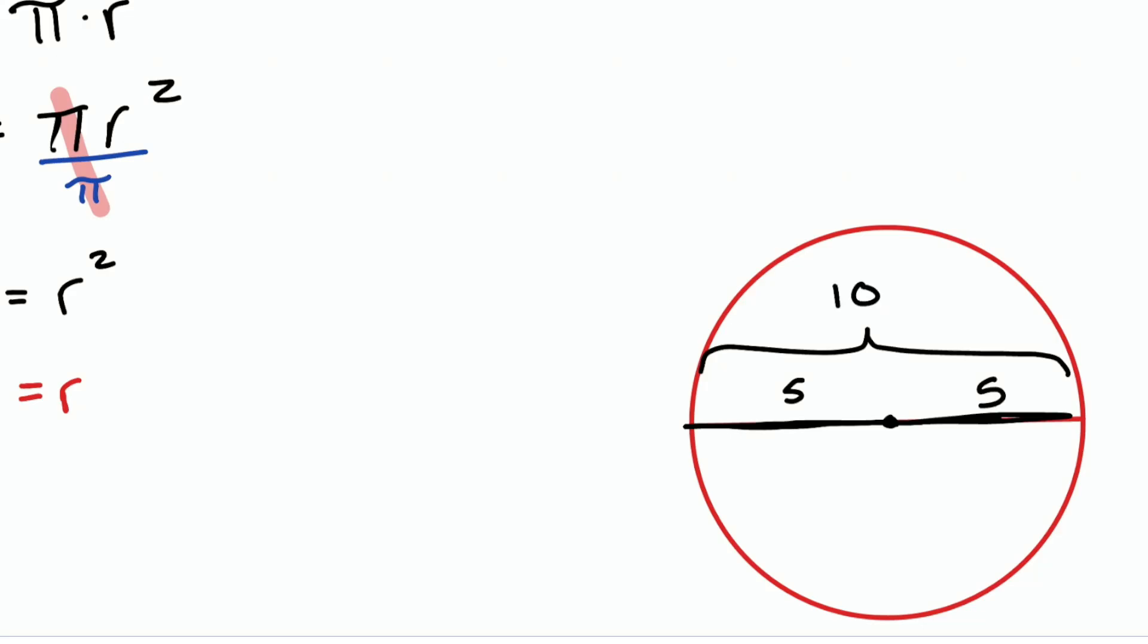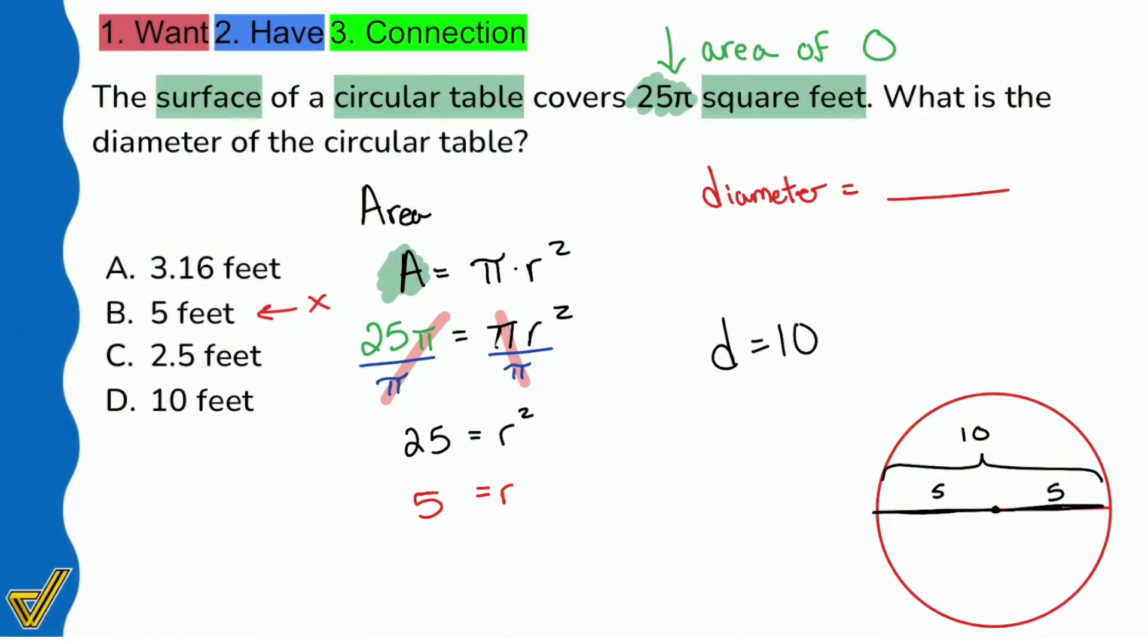Making the diameter 10. So there's our actual answer. The diameter is going to be 10 feet, and that's why D is the correct answer.